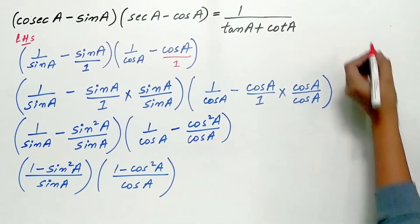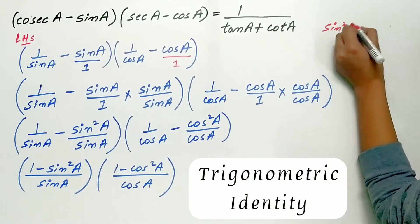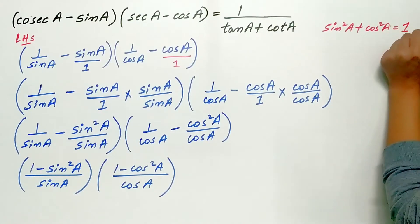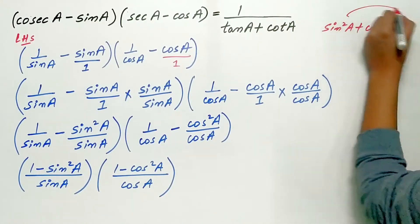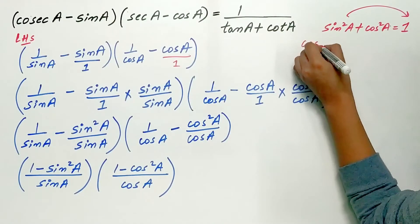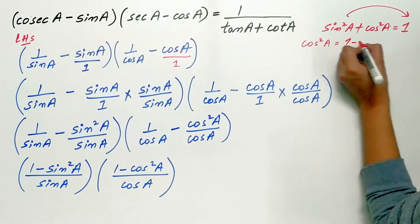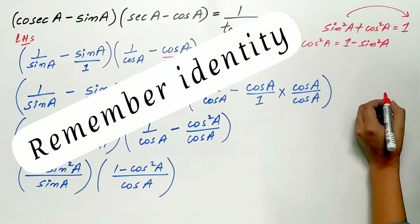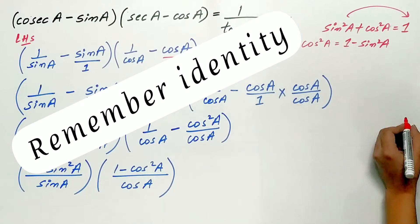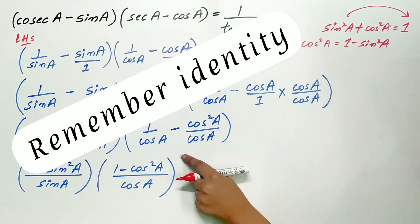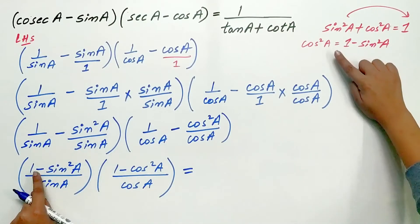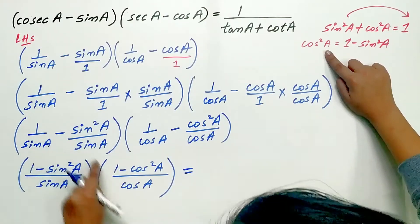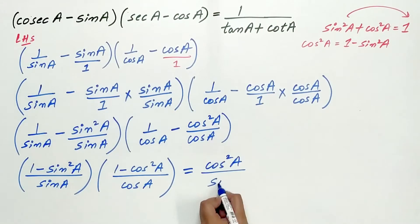Remember the trigonometric identity: sin²A + cos²A = 1. So 1 minus sin²A equals cos²A. Substitute cos²A in place of 1 minus sin²A, giving us cos²A by sin A.